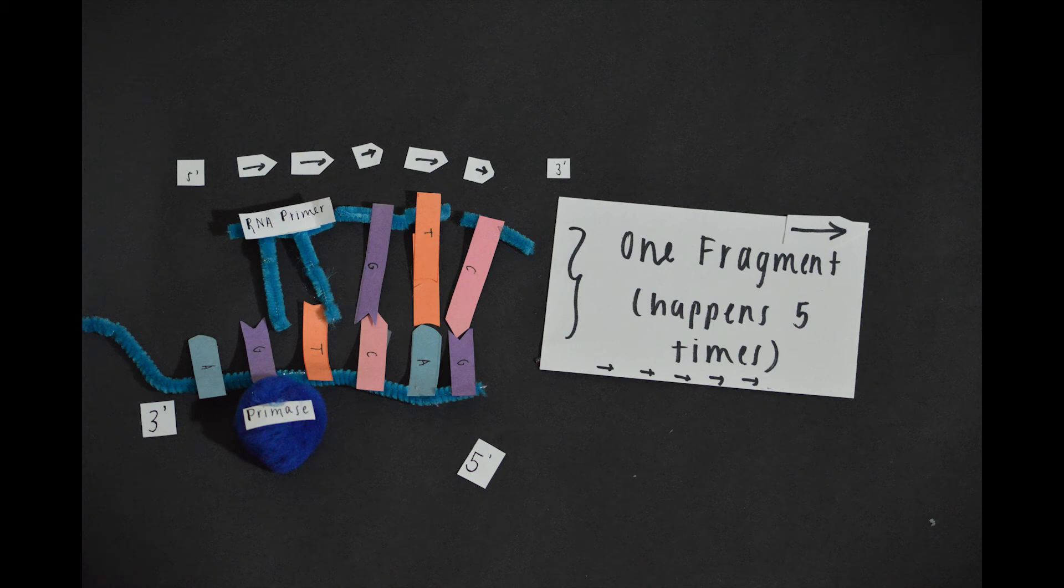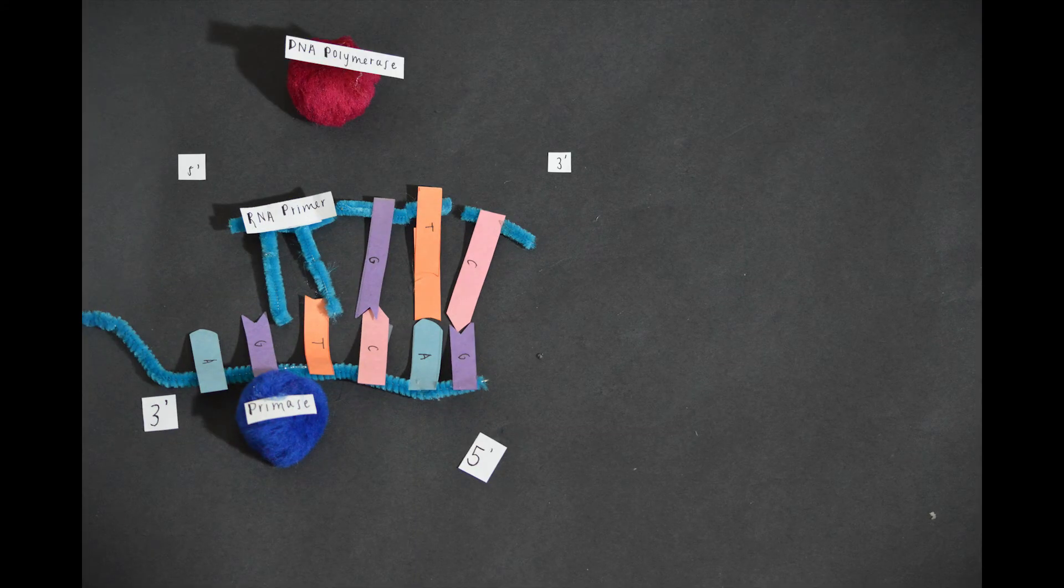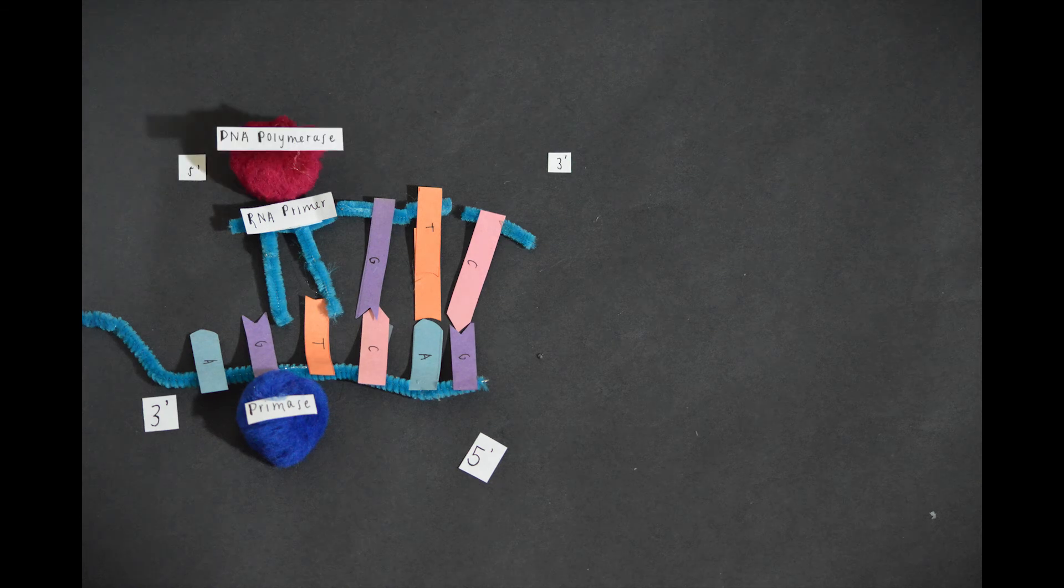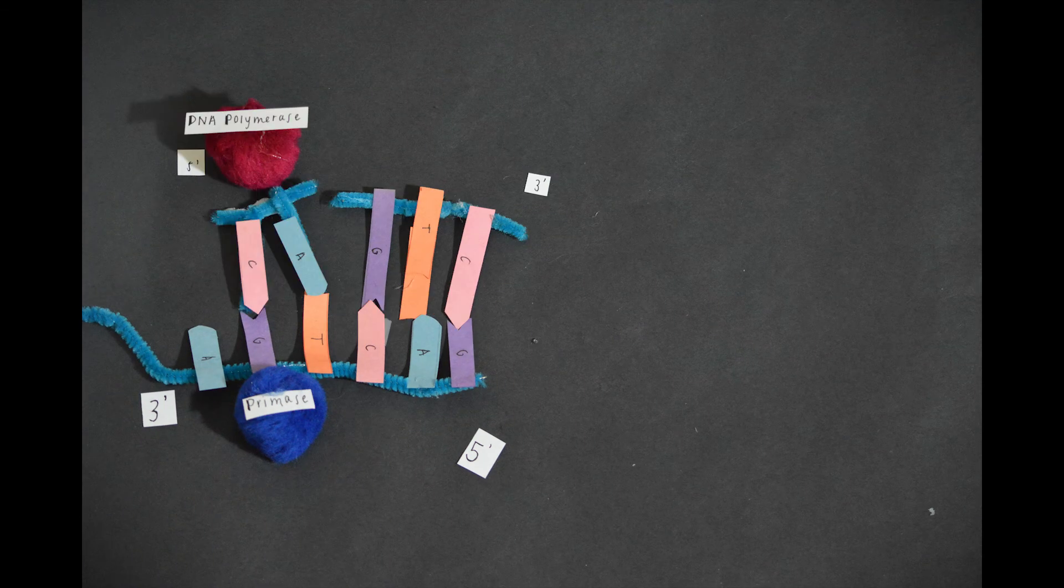Next, after each fragment has undergone the synthesis process, DNA polymerase goes back and replaces the RNA primer nucleotide with a DNA nucleotide, which ensures that the new complementary strand is composed entirely of DNA.